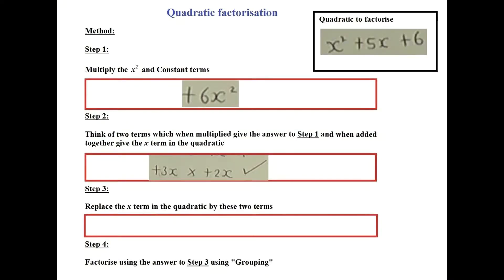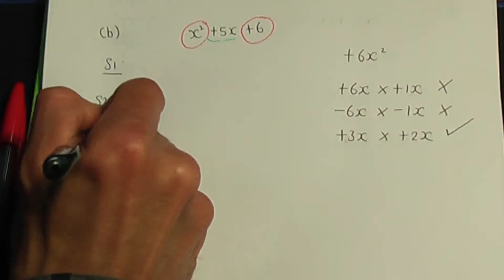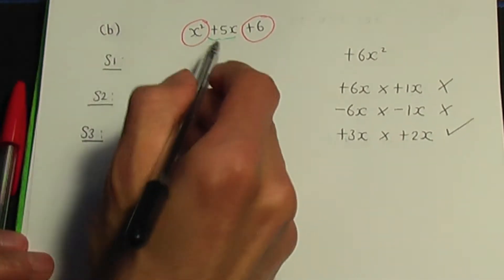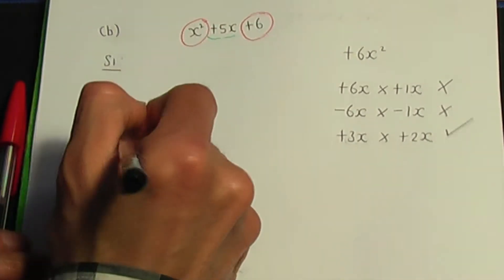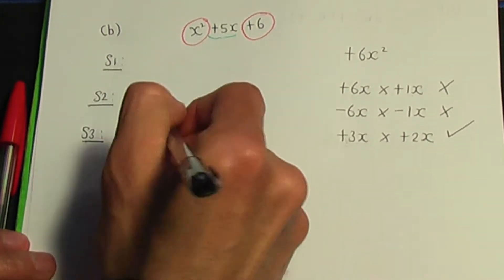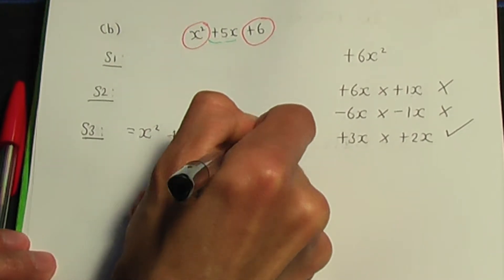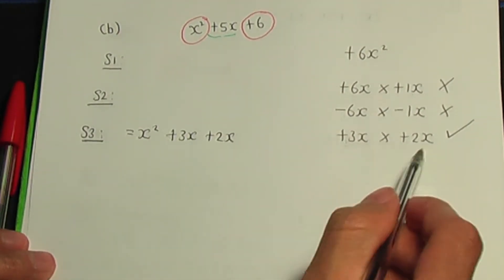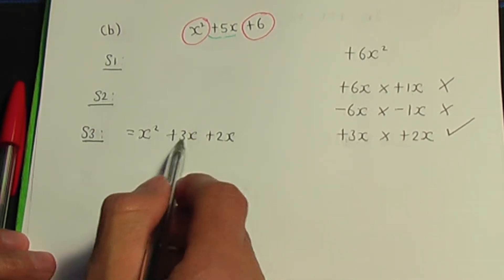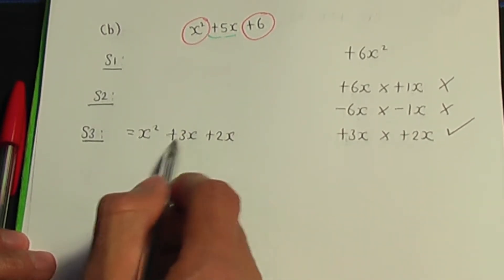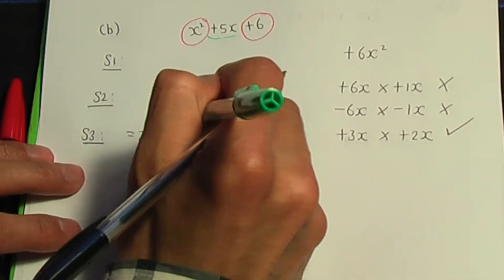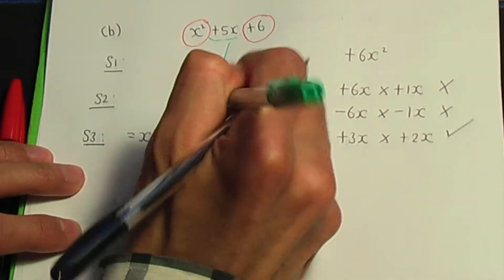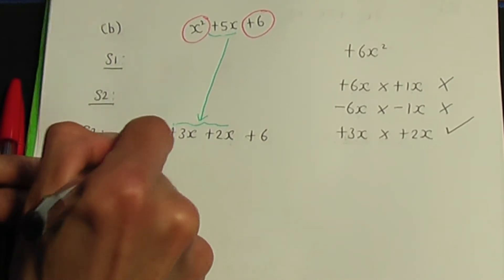Step number 3: replace the x term 5x in the quadratic by the two terms we thought about. We have x squared, and I'll replace 5x by plus 3x plus 2x — you can replace them in any order, it doesn't matter. Plus 6 at the end. So I've replaced the 5x by the two terms we thought about.